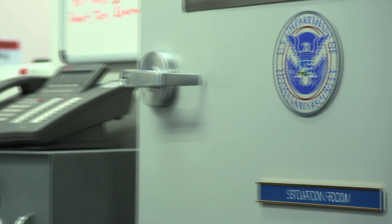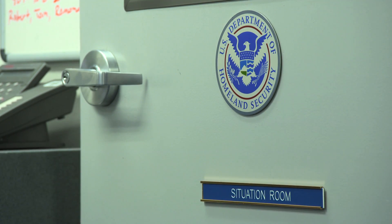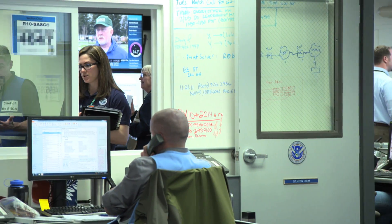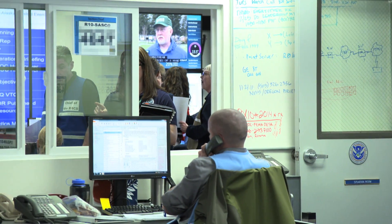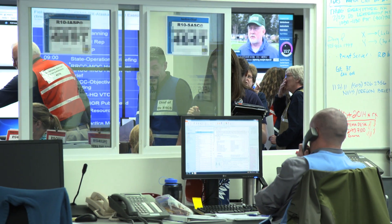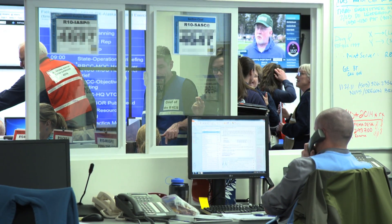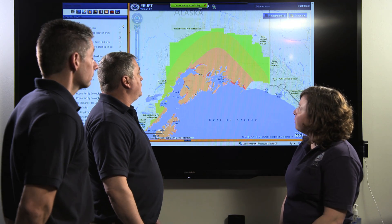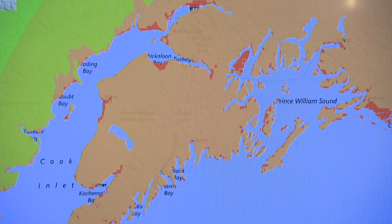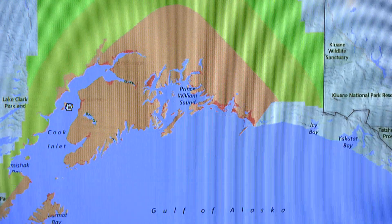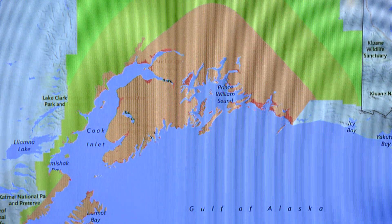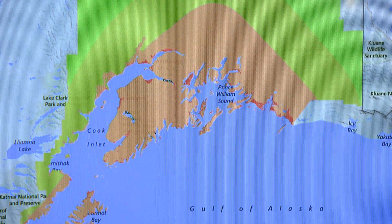Currently, we are planning for the Alaska Shield exercise, which is kind of replaying that 1964 event. We did receive a USGS Shake Map that was updated based on the event. Here we're showing shaking intensity — much of the impacts are in the Anchorage area, as well as Valdez, Cordova, and the Kenai Peninsula.